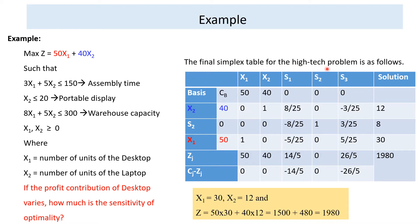The final simplex table for this problem gives: x1 = 30, x2 = 12, and z = 1980. Since it is a maximization, all values of cj − zj are less than or equal to 0, so optimality is achieved. The optimal solutions are x1 = 30, x2 = 12, z = 1980.